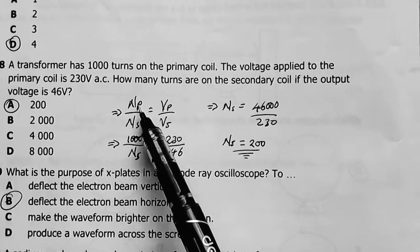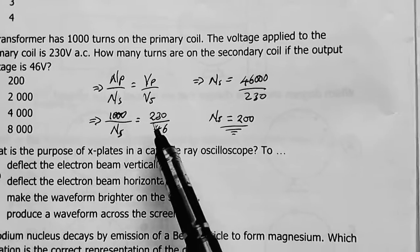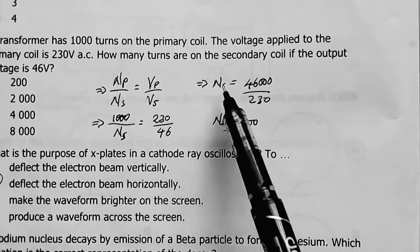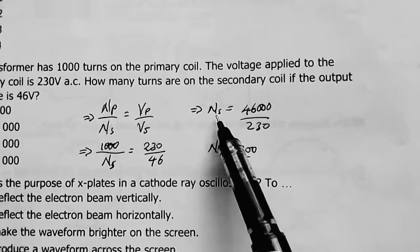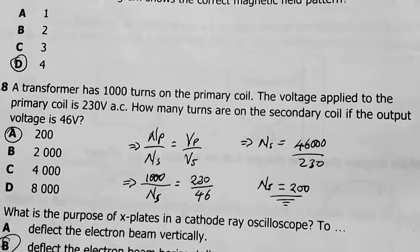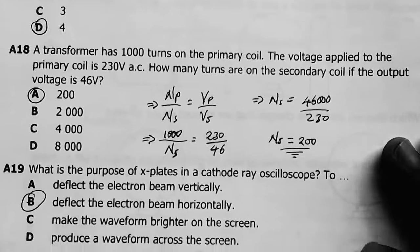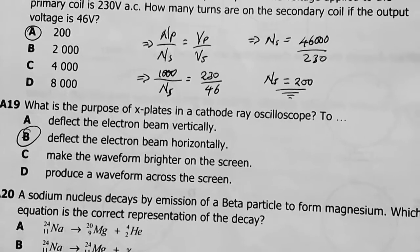Use the transformer equation: coils in the primary over coils in the secondary equals voltage in primary over voltage in secondary. You replace all the variables you have with this, then make Ns, the number of turns in the secondary, your subject. Then you divide, then your answer comes as 200 turns. This is a step-down transformer.